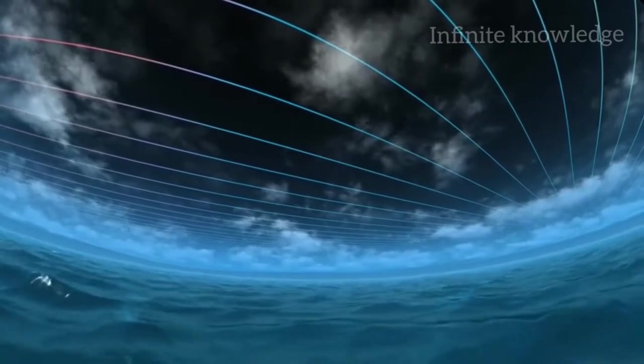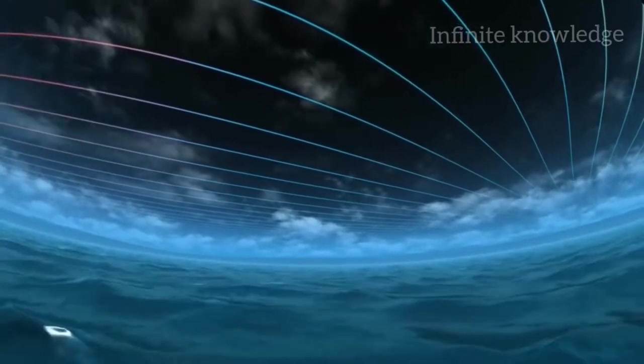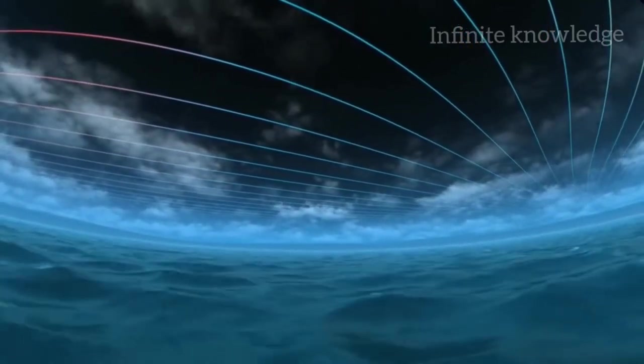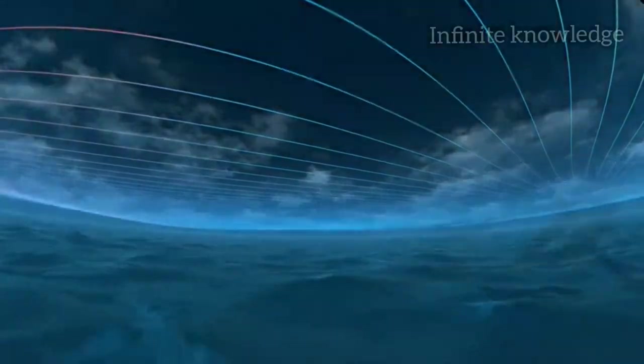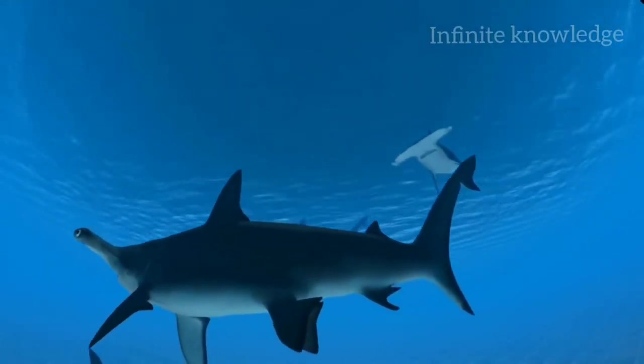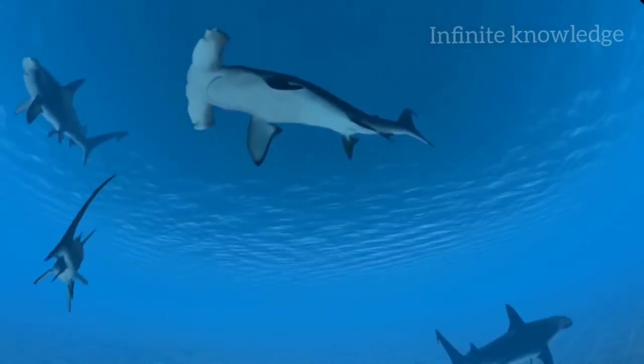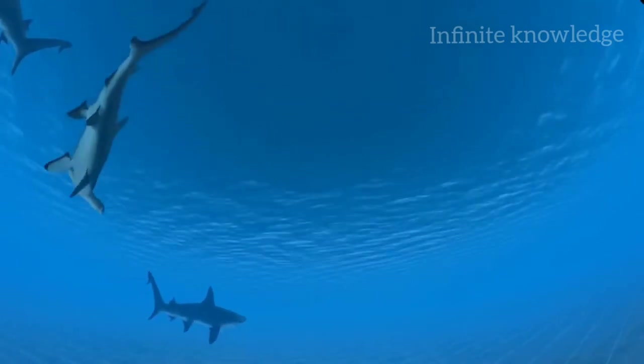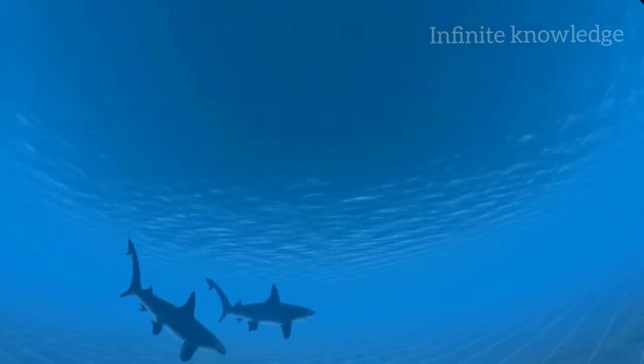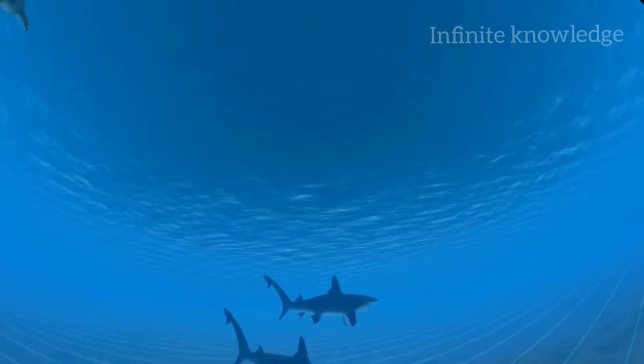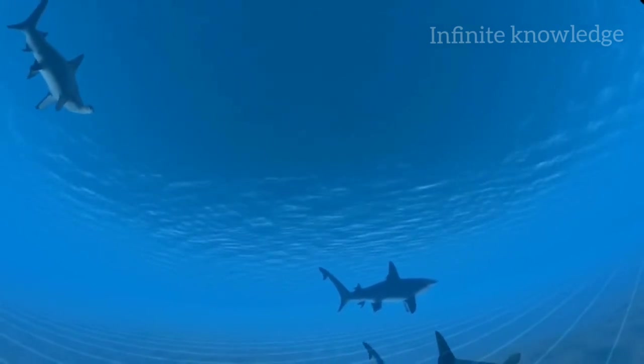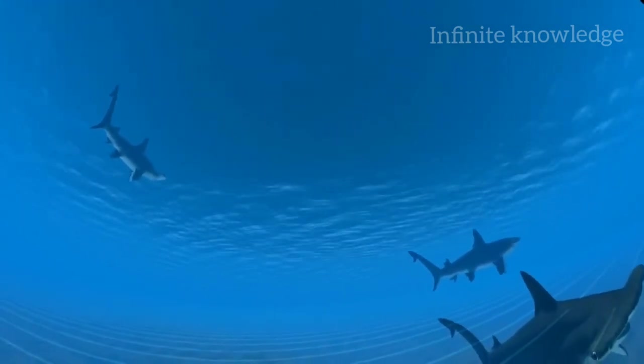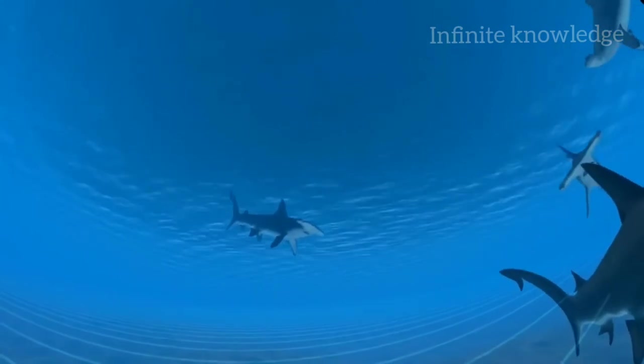Many different animals can sense Earth's magnetic field through structures in their eyes or brains. If fish swim along the direction of Earth's magnetic field lines, they sense nothing. But if they swim across the magnetic field, they can detect a tiny electrical force. This force guides them as they migrate north and south during the year.